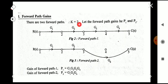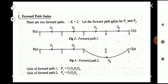So k is equal to 2, and we write the forward path gains: P1 = g1·g2·g3·g4 and P2 = g1·g2·g6. P1 is the first forward path and P2 is the second forward path.